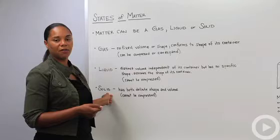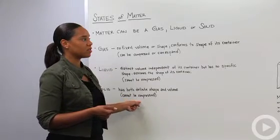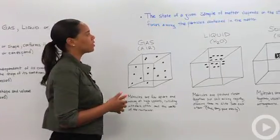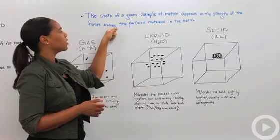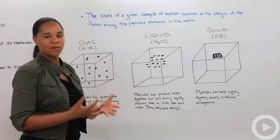Then you have solids, which have both definite shape and volume and definitely cannot be compressed. How do you know what state the matter is going to be in? The state of a given sample of matter depends on the strength of the forces among the particles that are actually contained in the matter, so it'd be specific to whatever system you're talking about.